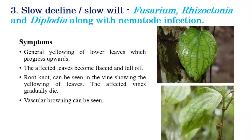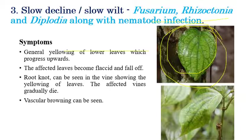The third disease is slow decline or slow wilt, caused by species of Fusarium, Rhizoctonia, and Diplodia, along with the association of nematodes. General symptoms include yellowing of lower leaves and flagging and drooping of leaves. Vascular browning may also be observed, and if nematodes are associated, infection severity increases.